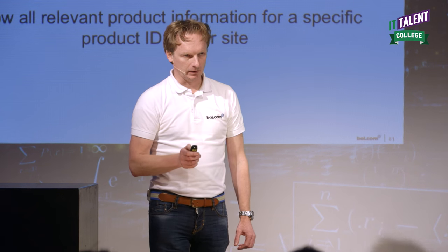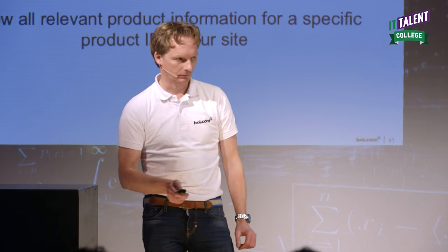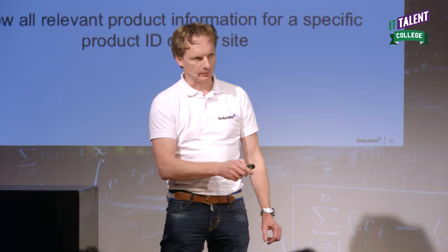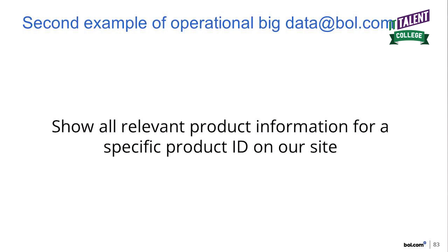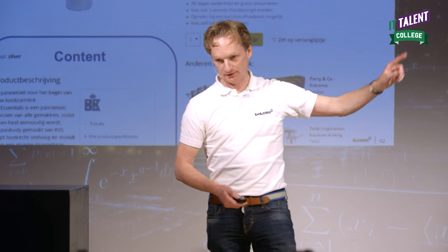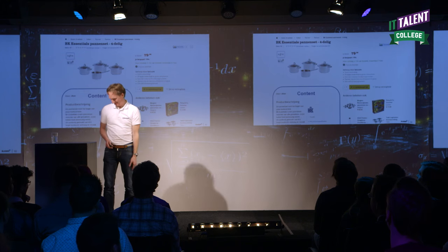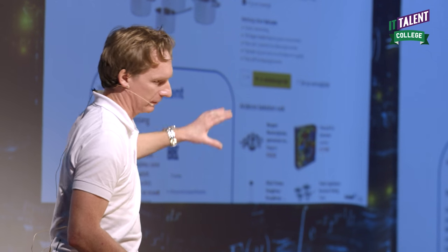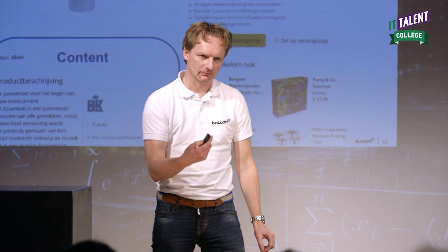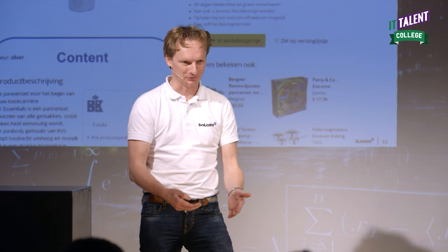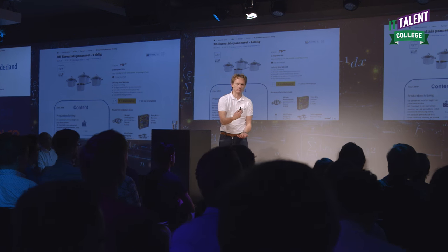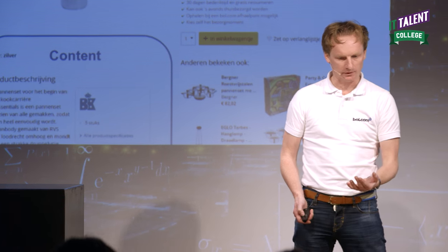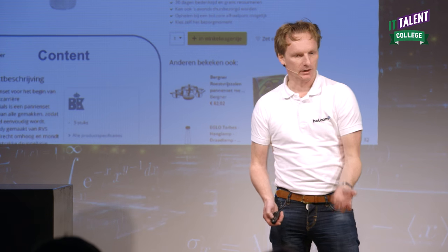Those examples are pretty high level, but it's difficult to dive in within 10 minutes — hopefully I've given you a bit of flavor. The last example on operational big data is pretty similar to the pricing solution, but now for product information. If you're looking at a product — product description, characteristics, product specification — it's similar to the price, but you usually don't have multiple product descriptions. It's more extensive data that we publish to the website using a similar architecture, where the webshop makes a request to the product and content service.